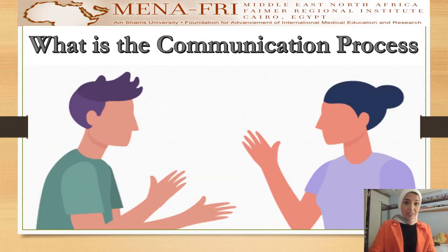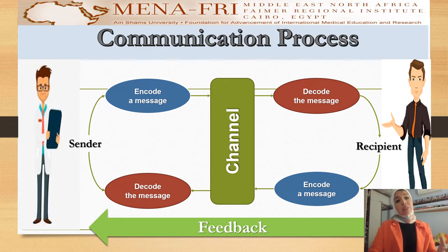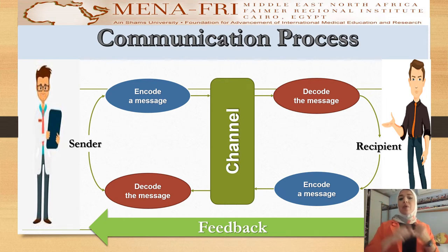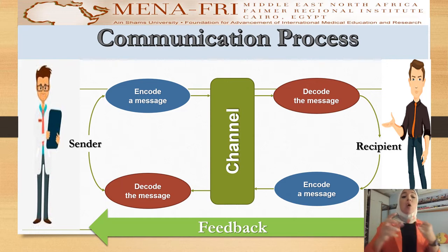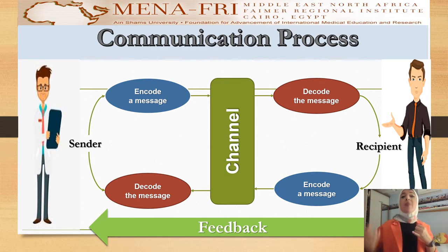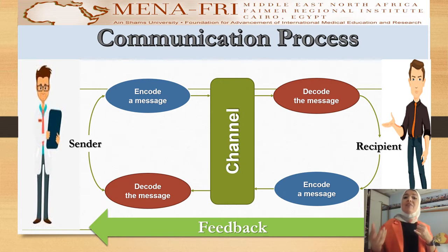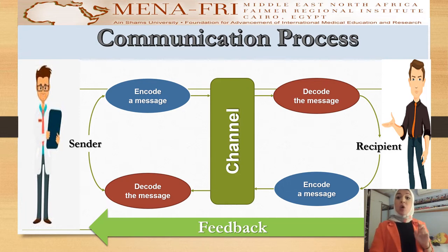What is the communication process? The communication process involves a number of components. The first important component is the sender, who encodes a message and sends it via a channel to the receiver, who in turn decodes the message and then encodes another message to resend it as feedback to the sender, to make sure that the message was appropriately delivered and understood.